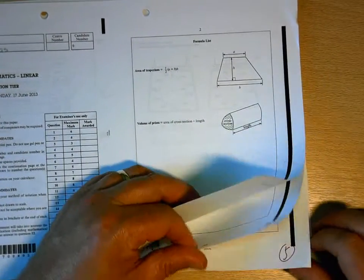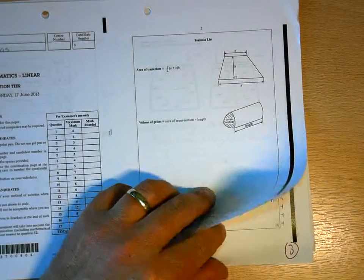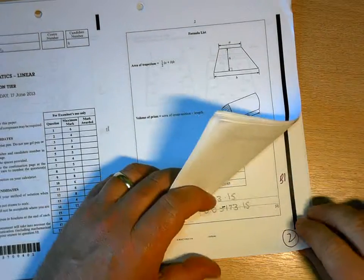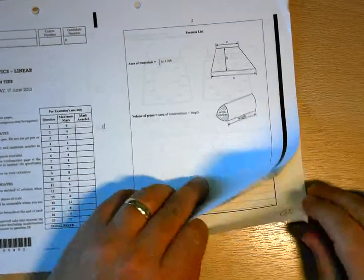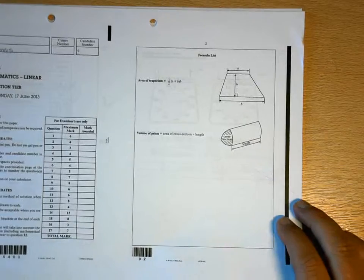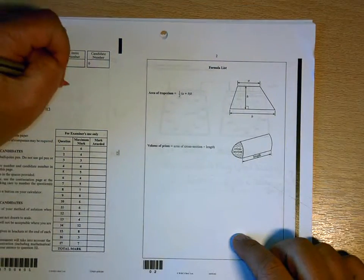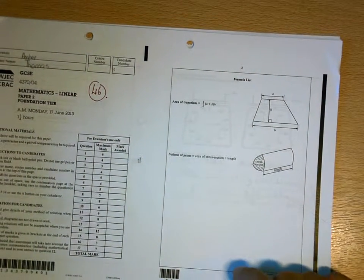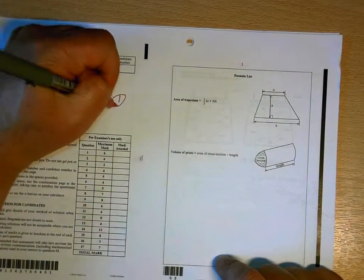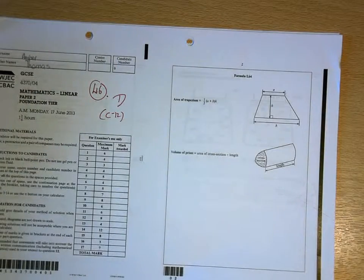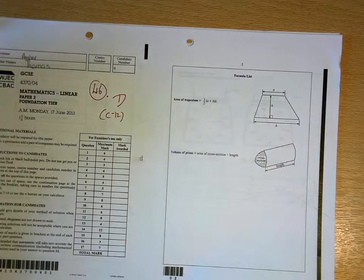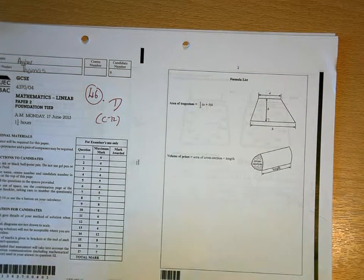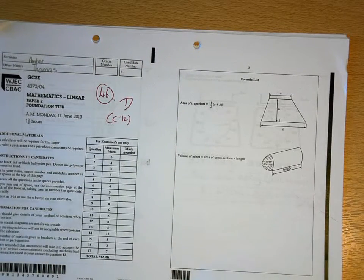Okay, Amber. 7, 12, 15, 25, 35, 41, 43, 45, 46. So actually, you've done a lot better in this paper than you did in the first one. 46 is a grade D. It's about 12 marks off a C. But you should be very encouraged by that because it's quite a challenging paper. And you had a good stab at some quite tricky questions. Well done.